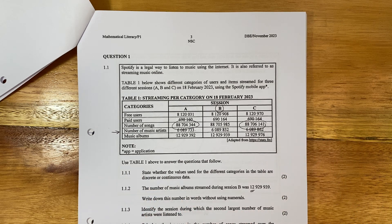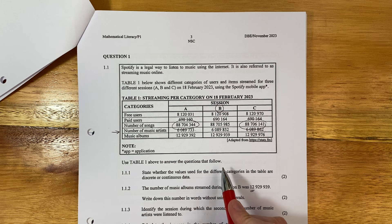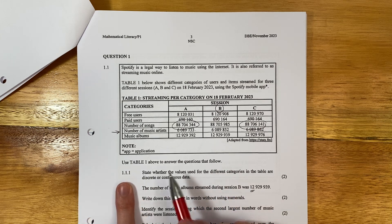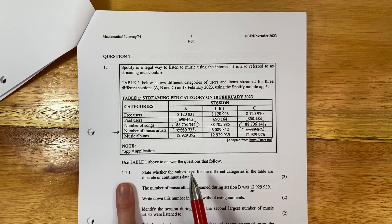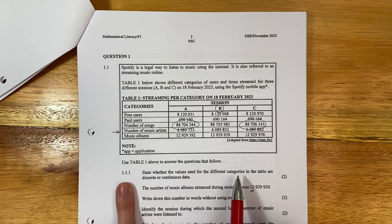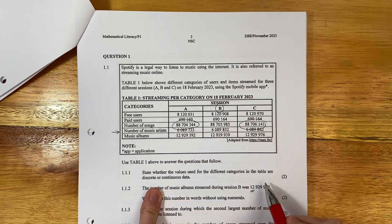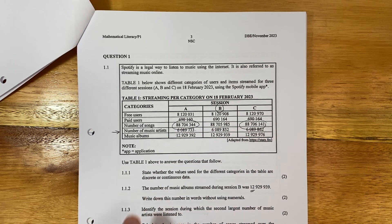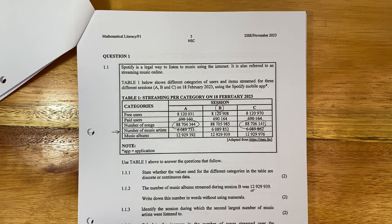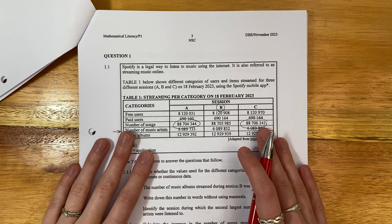Use table one above to answer the questions that follow. So 1.1.1. State whether the values used for the different categories in the table, so these categories here, are discrete or continuous. Now, this obviously calls into question whether we understand what discrete and continuous means.